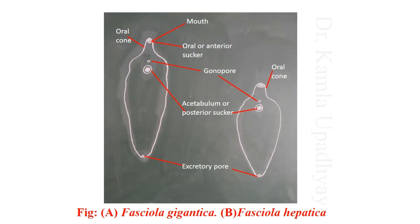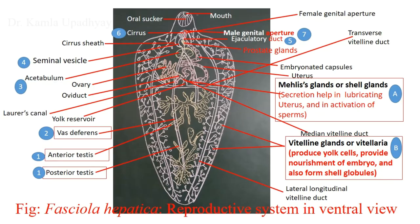The life cycle of Fasciola hepatica involves many larval stages. In pictures you can see two species: the larger Fasciola gigantica, which is the common fluke of cattle, and the smaller Fasciola hepatica. Both have two suckers — an oral sucker anteriorly and an acetabulum posteriorly — without hooks. The anterior end contains the mouth, the posterior end has an excretory pore, and near the acetabulum is a gonopore. The body looks like a leaf.